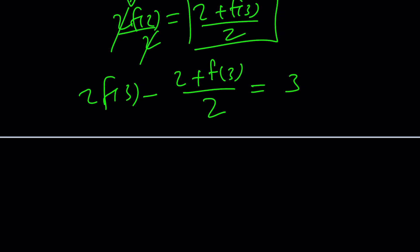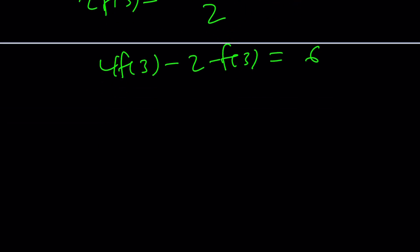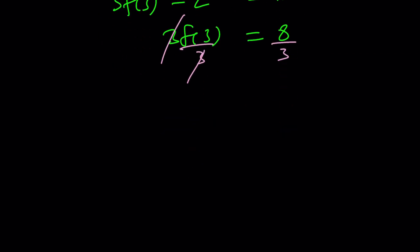Now, we only need to solve for f of 3. And that's the only thing that's unknown. Make a common denominator. And don't forget to negate and cross multiply. Now, 4f of 3 minus f of 3 is going to be 3f of 3 minus 2 equals 6. Add 2 to both sides. You're going to get 3f of 3 equals 8. Divide both sides by 3, finally. And you get f of 3 equals 8 thirds.